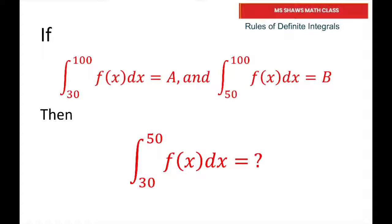So here we have the problem. They're defining the integral from 30 to 100 of f(x)dx equals A, and then we have the integral from 100 to 50 of f(x)dx equals B.